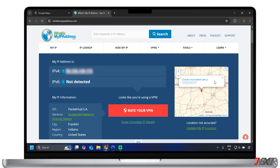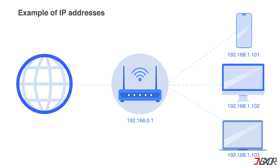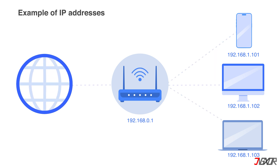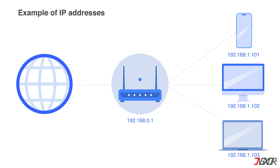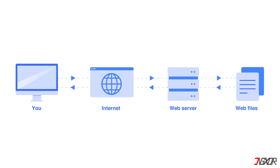GPS is very accurate, but it's only shared with websites if you specifically permit them. Your IP address, on the other hand, is like your internet's return address. Every device connected to the internet has a unique IP address. This address is assigned by your internet service provider and is linked to your general location, not your exact street address. It's how websites know where to send the information you request. Unlike GPS, websites always have access to your IP address.